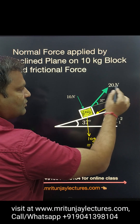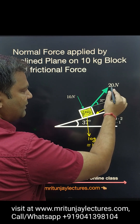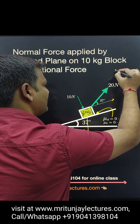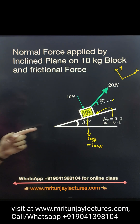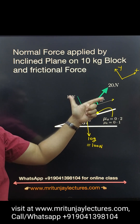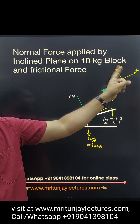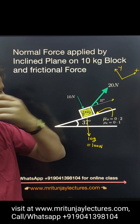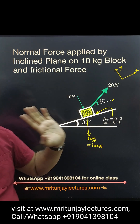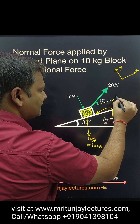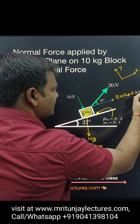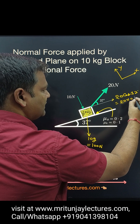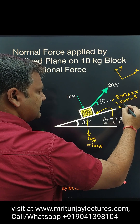Now this applied force is 20 Newton. Component of 20 Newton along the X-axis — we have considered capital X axis and capital Y axis. The component of all forces along X and Y. So 20 cos 37 — cos 37 is 0.8, so 20 into 0.8 — that is 16 Newton.